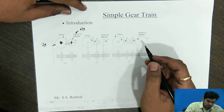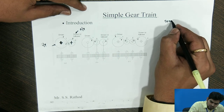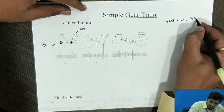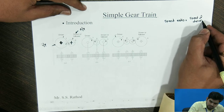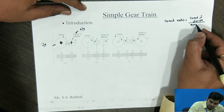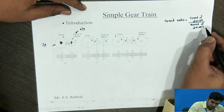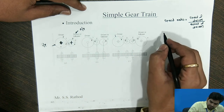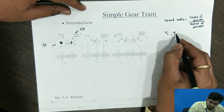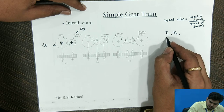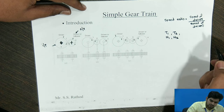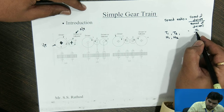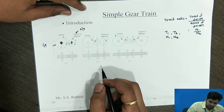We have to find out the speed ratio, which is the speed of the driver divided by the speed of the driven. Gear number 1 has teeth t1 and speed n1; gear number 2 has teeth t2 and speed n2. So the speed ratio is equal to n1 divided by n2.